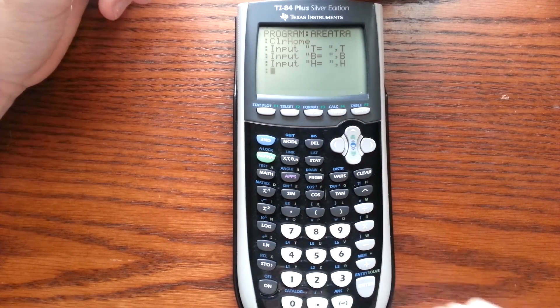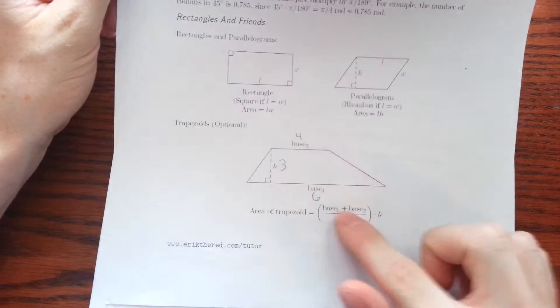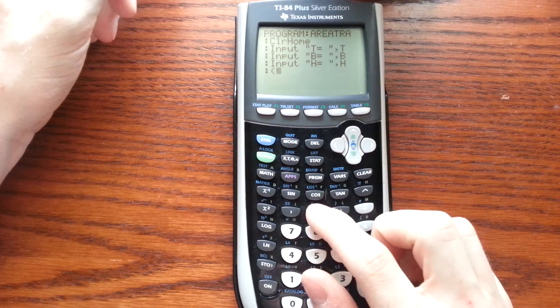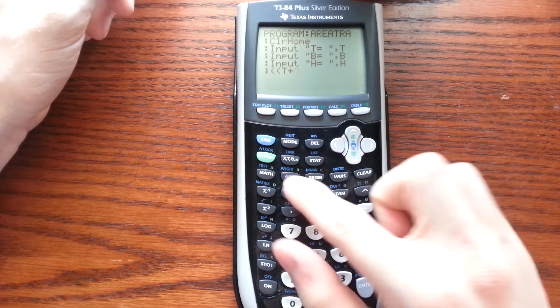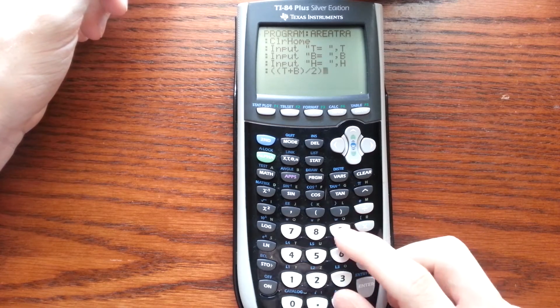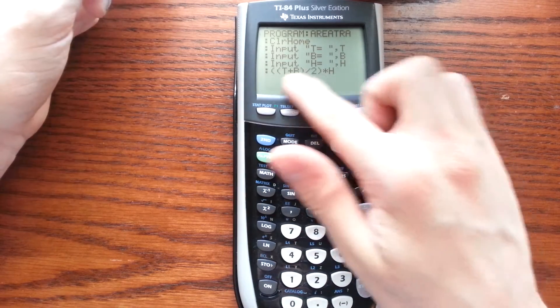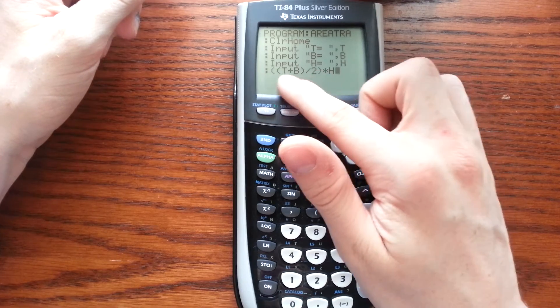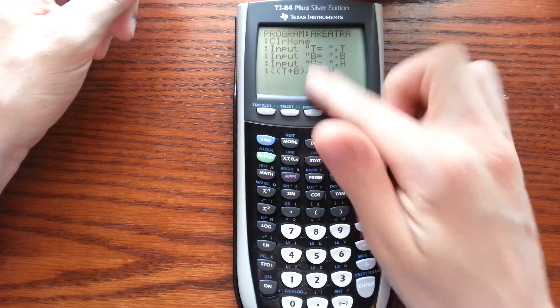Now from here, we press Enter. And now we're going to do the formula right here. We're going to do two parentheses, T plus B, parenthesis over 2, parenthesis times H. Now this is what we have here. So we're doing top, or B2, right there, plus bottom, or B1, over 2, times H. And that's where we're inputting our values.